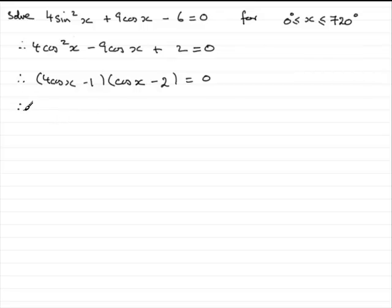So in the usual way it would mean that either one of these factors is equal to 0, so therefore 4 cos x minus 1 should equal 0 or the other factor cos x minus 2 equals 0. And for this equation here if we were to add 1 and divide both sides by 4 we would end up with cos x equaling 1 quarter and for this one if we add 2 to both sides we end up with cos x equals 2.